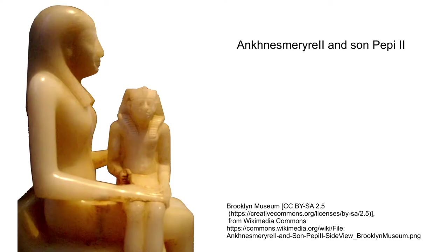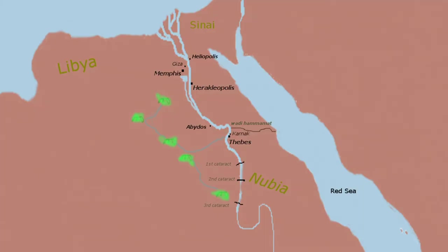Pepe II is the longest-ruling pharaoh in history, reigning about 94 years. He came to power as a child and died an old man. As the Old Kingdom came to an end, there was localized flooding in the Nile Delta, followed by famine because flooding produces lower crop yields. The influence of the pharaohs over the governors became less, and the governors became like middlemen between the pharaoh and the people.